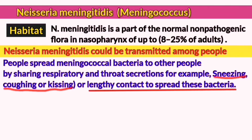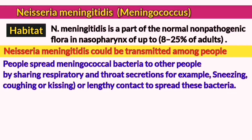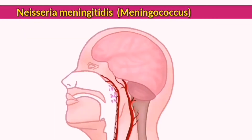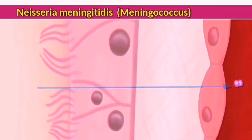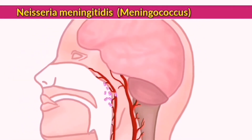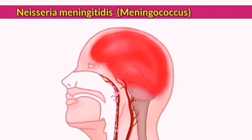Infection is transmitted through sneezing, coughing, or aerosols carrying meningococci, which can then colonize, reproduce, and cause local infections of the nasopharynx, from which it can penetrate the inner membrane and enter the blood. If it enters the bloodstream and manages to evade the immune system, it can cause septicemia, sometimes referred to as meningococcemia.